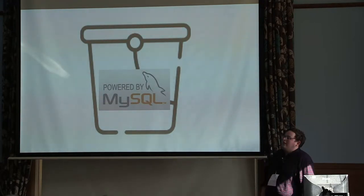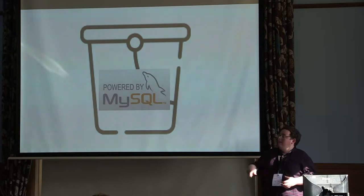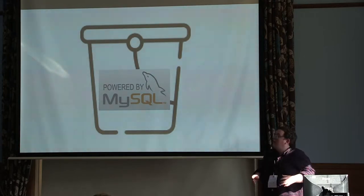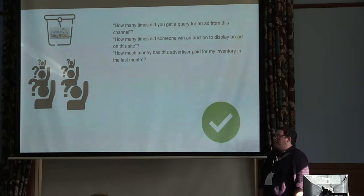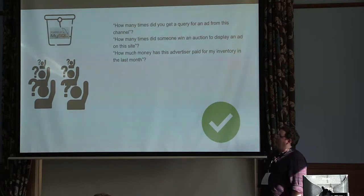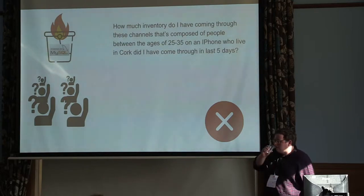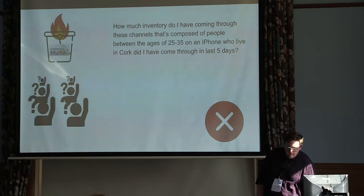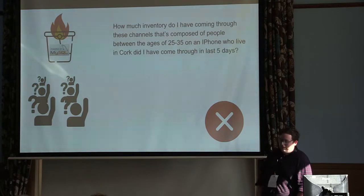The first solution was MySQL — all the auction servers used to write all the information about the auctions to files, and there would be a process to collect those files and perform aggregations to produce tables in MySQL, with a bunch of aggregations, metrics, and a few dimensions. Our users can ask really simple questions, like how many times did I get an ad request for this channel, or how many times did this advertiser not bid on my inventory. But when you ask more complicated questions — like how many people visited my site from Limavady in the past five days between the ages of 25 and 35 who like sport and watch TV — MySQL just falls apart at the scale we operate.